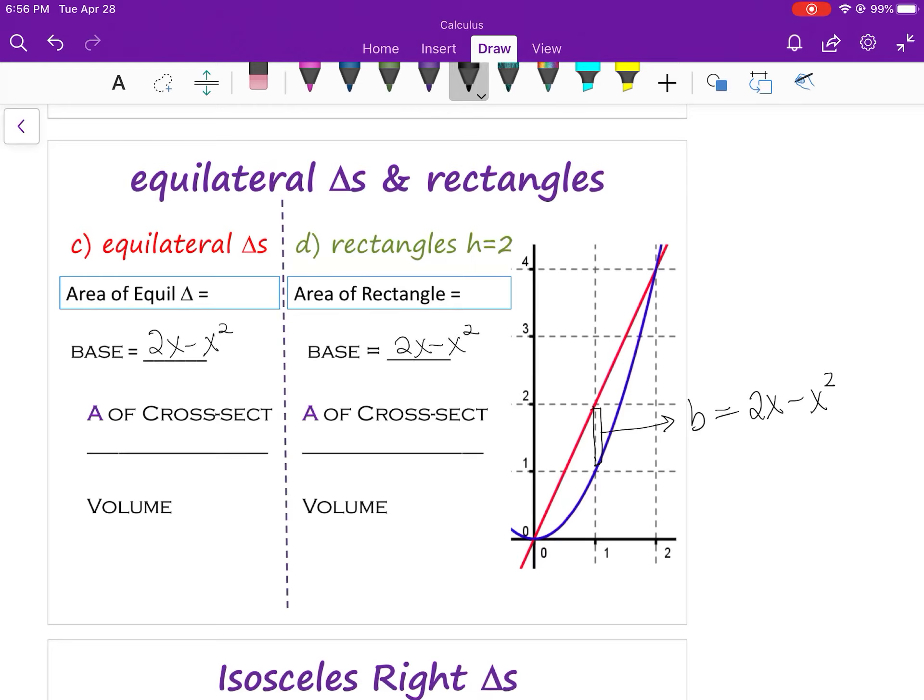All right, equilateral triangle. From the previous slide, the area was radical 3 over 4 times the base squared. So I'm going to plug this in for the base and then find the volume.